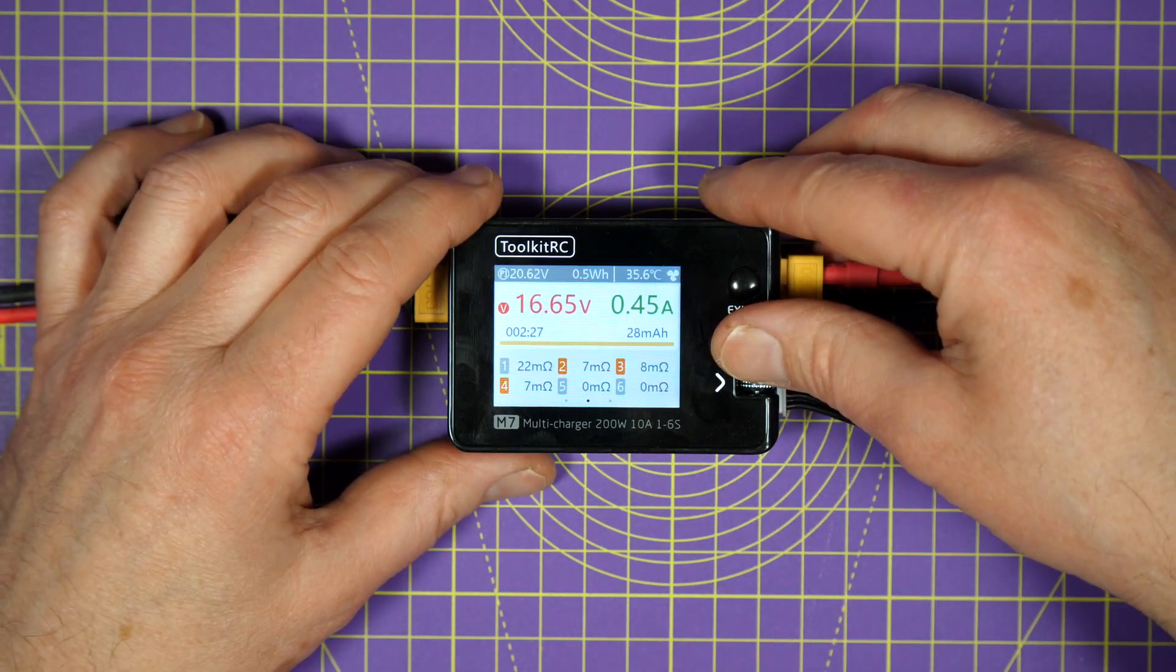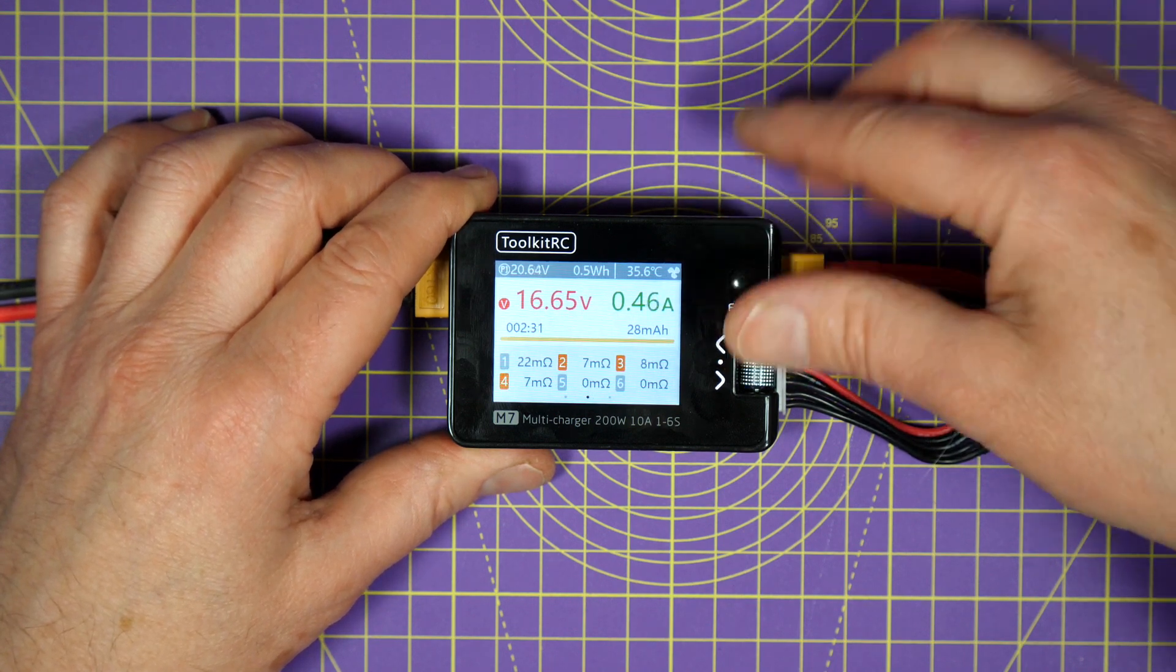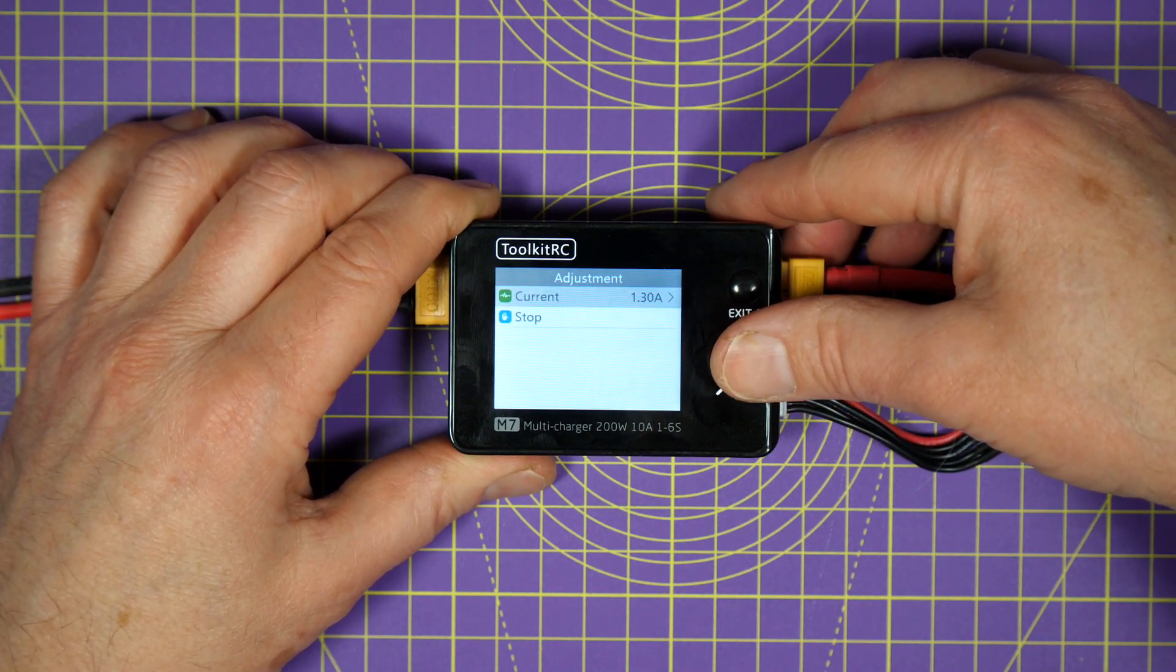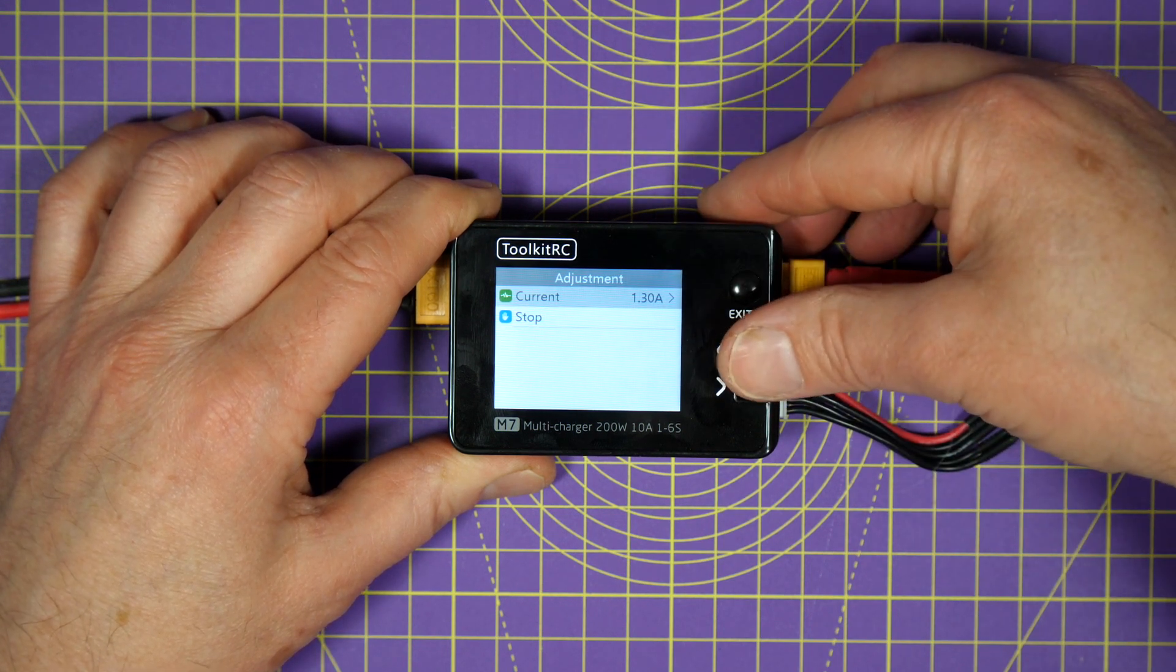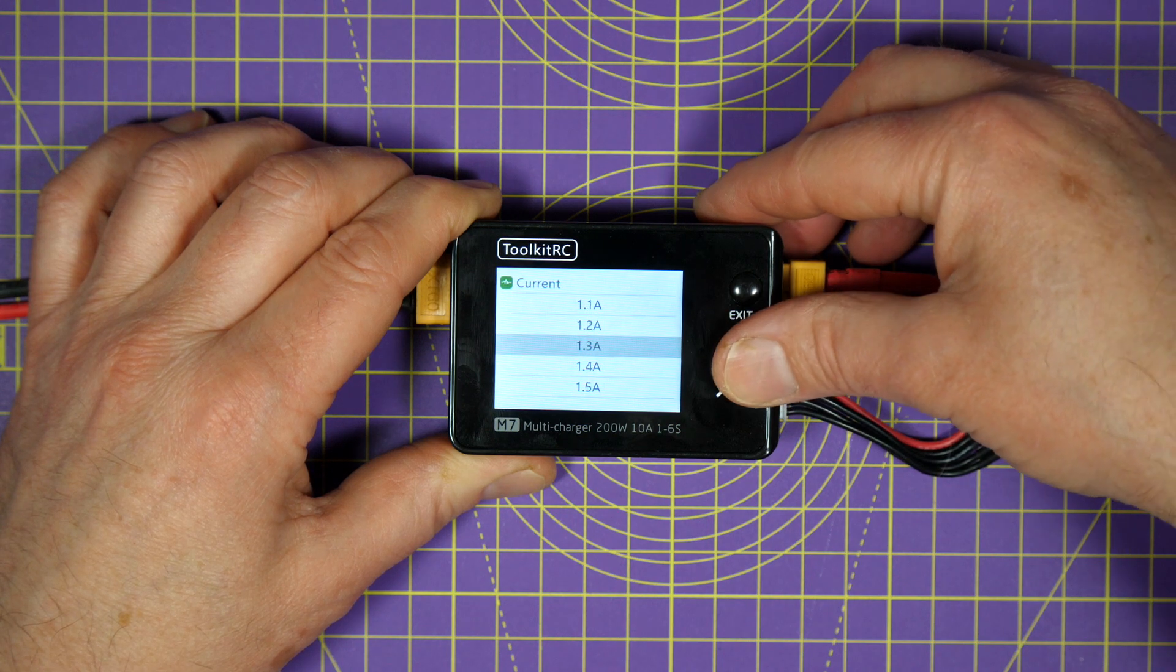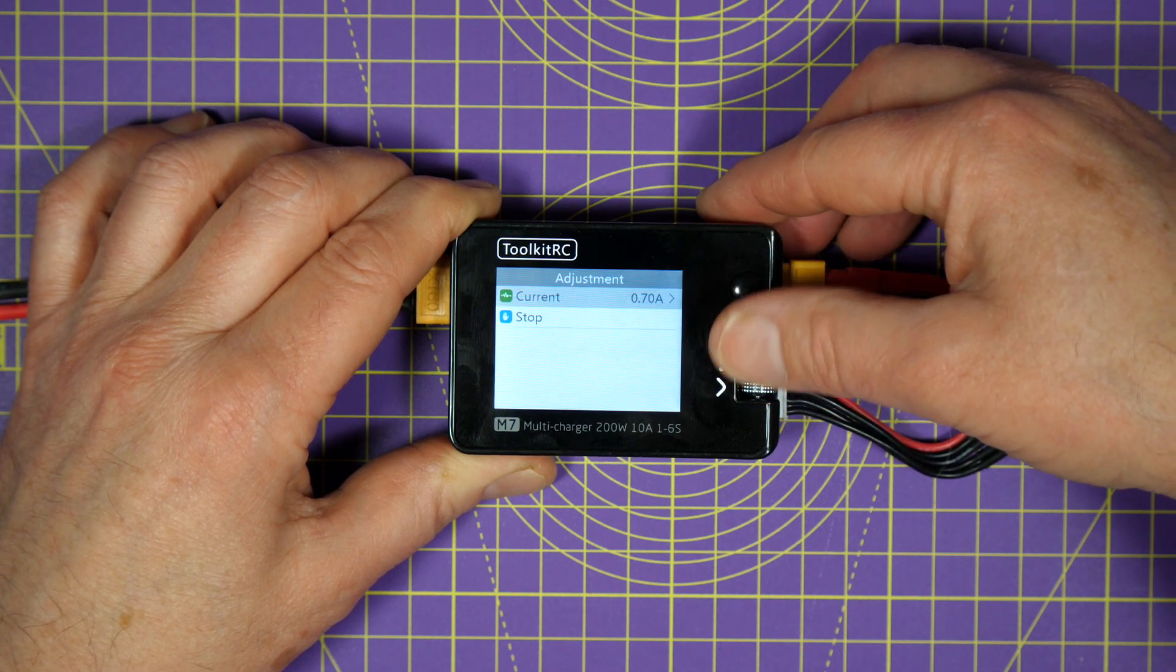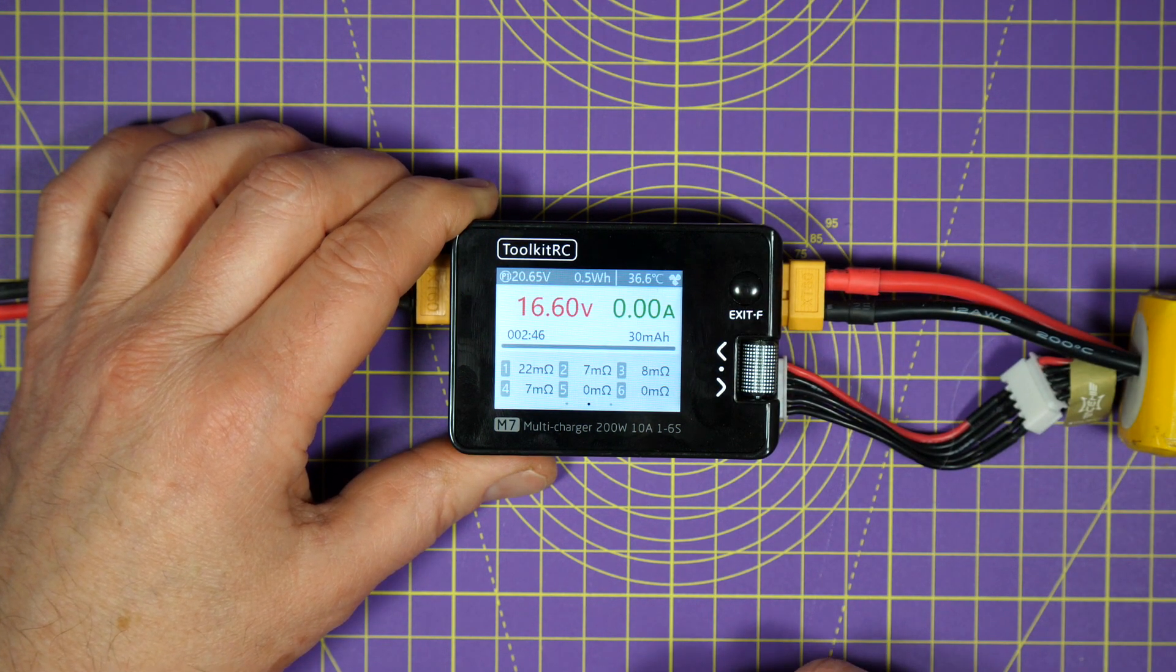So that's how you charge, all pretty simple. But you can do more with this. If you want to change the current whilst it's charging, you just press the scroll wheel and you can tweak around to whatever you want, or you can select stop. Nice and simple.